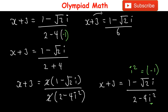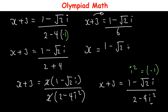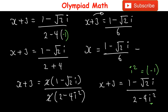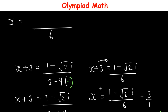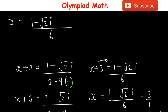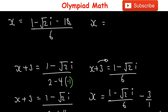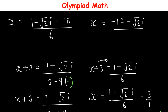Moving +3 to the right-hand side: x = (1 - √2·i)/6 - 3 = (1 - √2·i - 18)/6 = (-17 - √2·i)/6. This is the second solution for x.